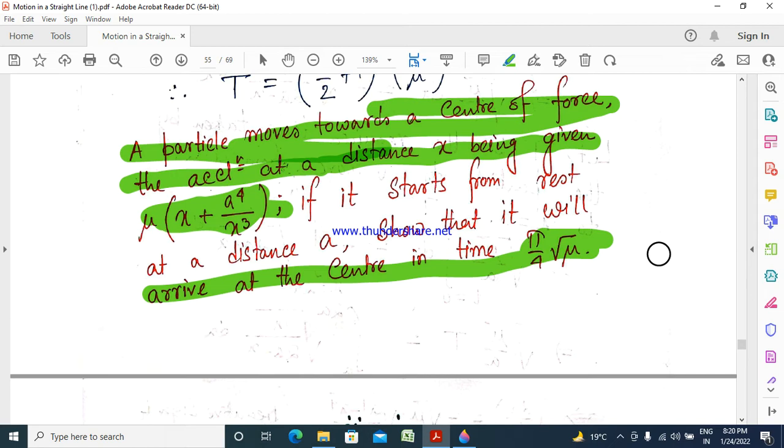A particle moves towards center of force. At distance x, the acceleration is mu into x plus a to the power 4 by x cubed. If it starts from rest at a distance a, when x equals a at t equals 0, the velocity is 0. Show that it will arrive at the center in time pi by 4 root mu.